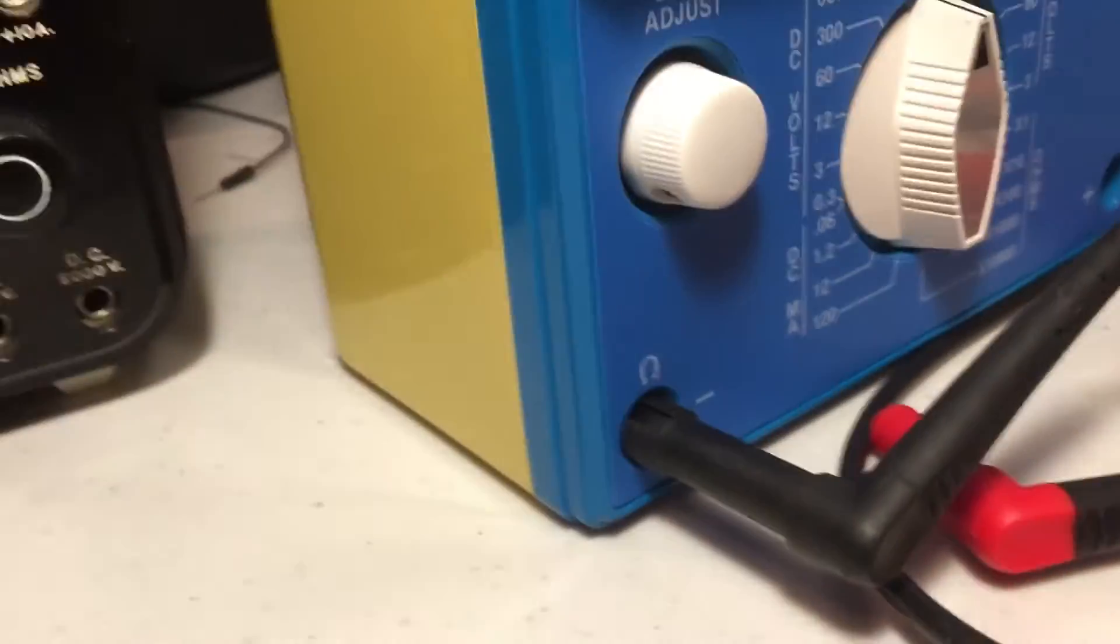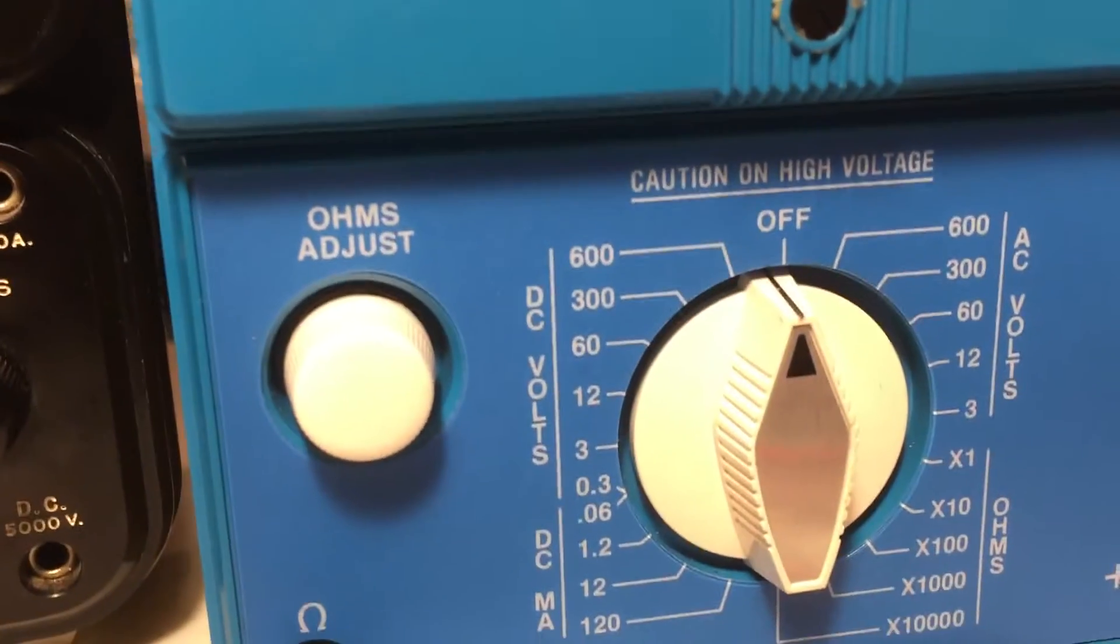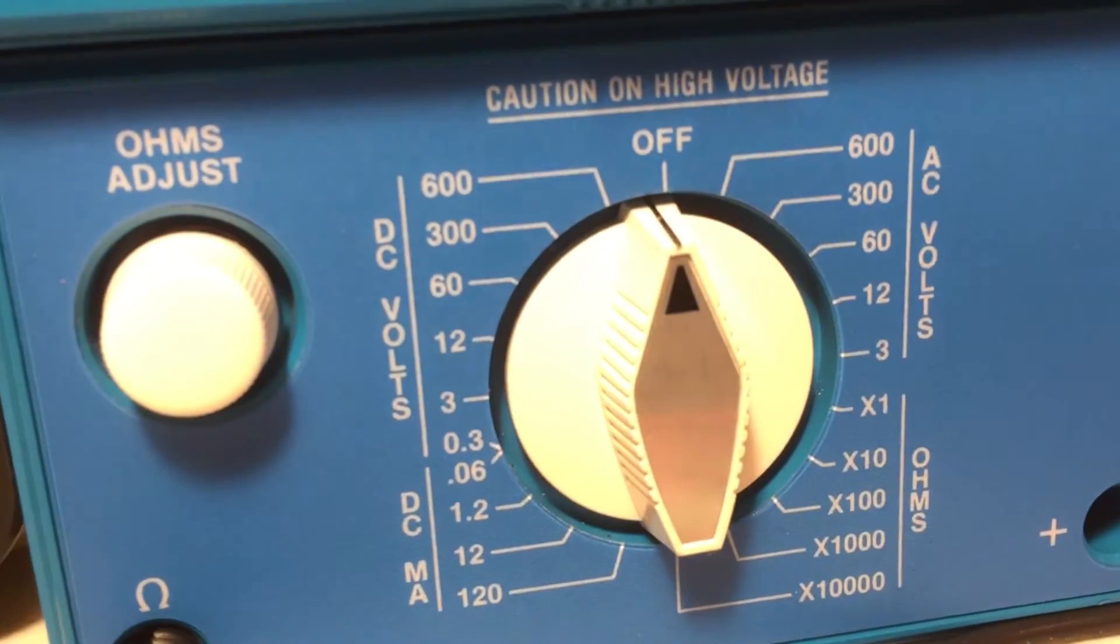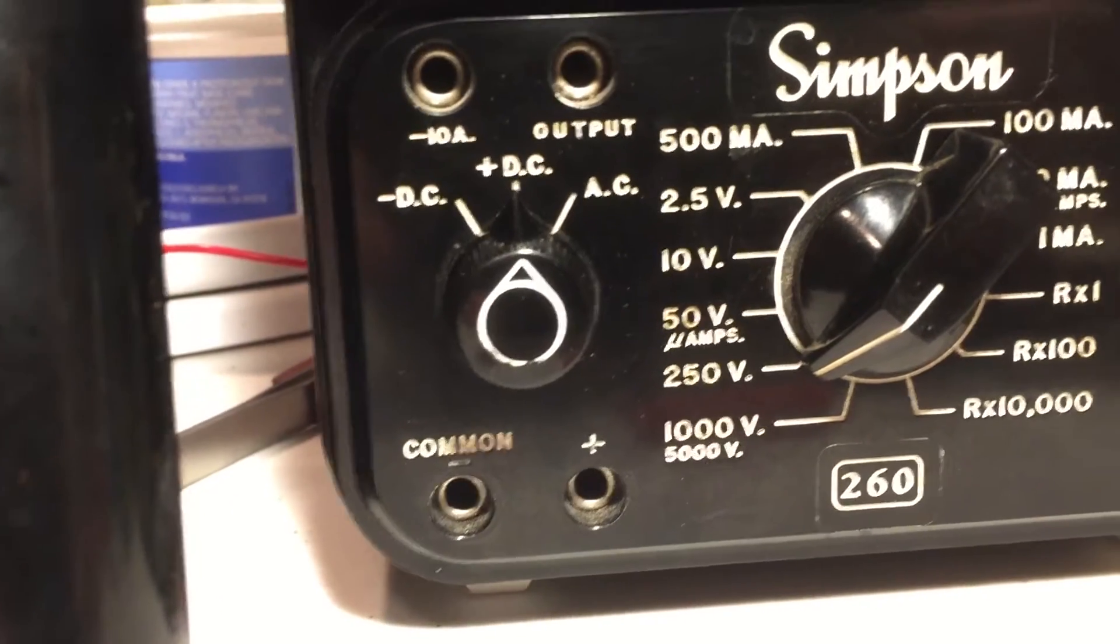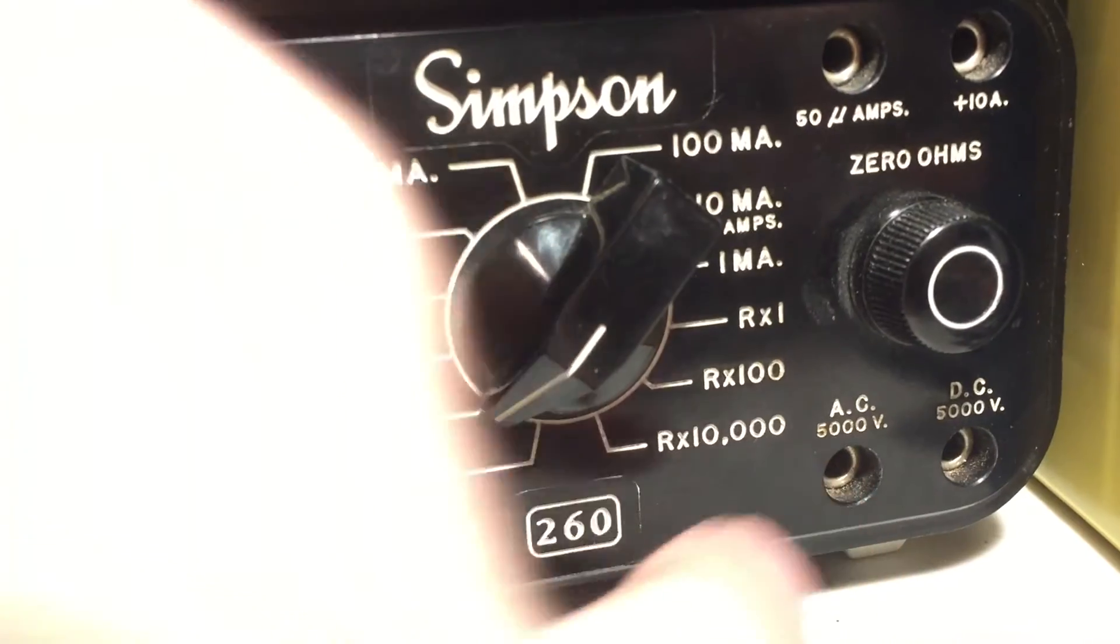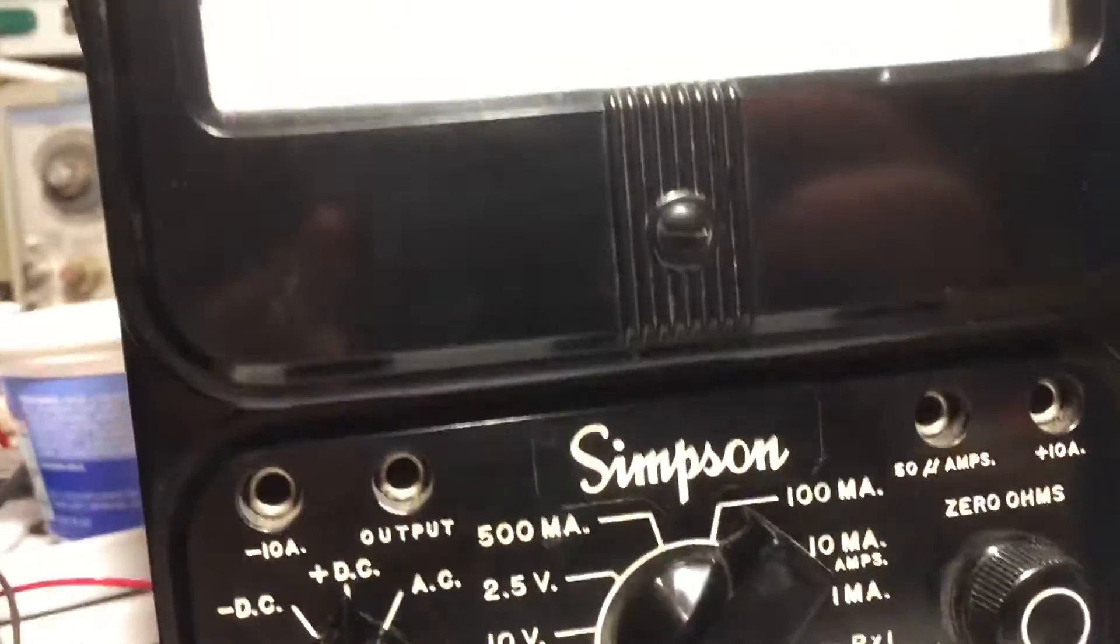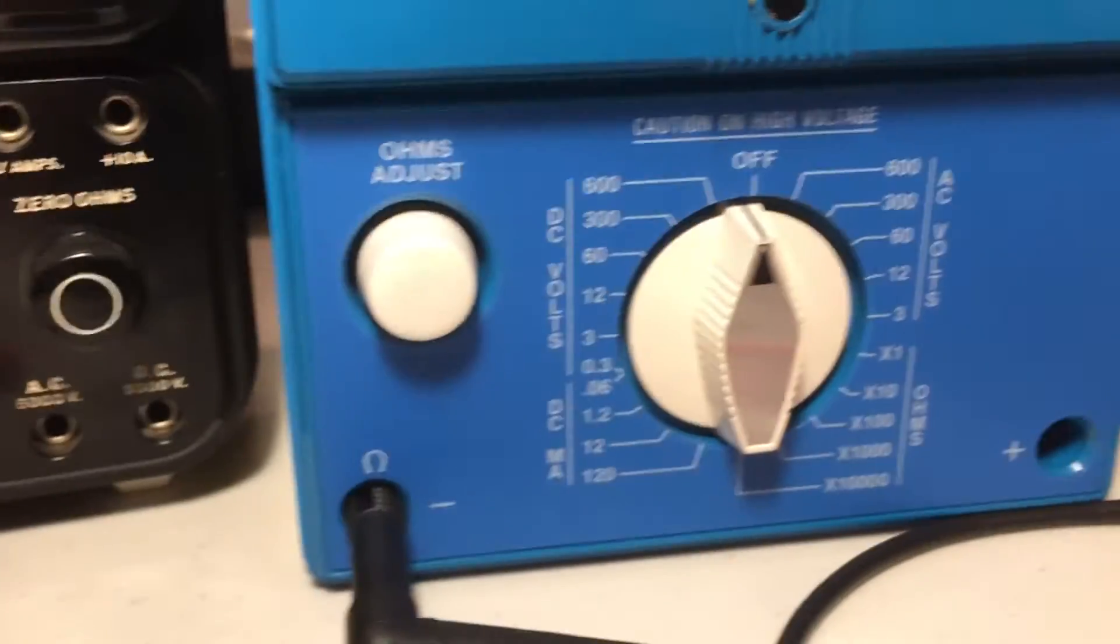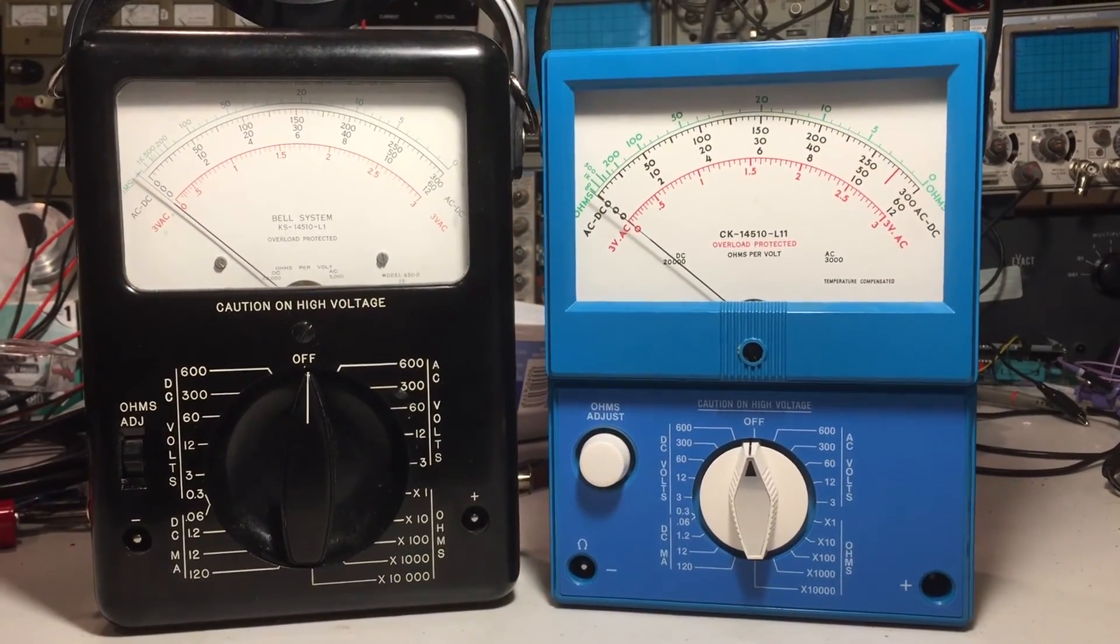Okay so other things to note differences between it and the regular 260 at least the series three here is this only goes up to 600 volts whereas the normal 360 goes to a thousand on this regular jacks or even its high voltage jack supposedly 5000. I've actually put 3500 volts through this guy and it didn't have any problems. Wouldn't really recommend that on a regular basis. All right so that's these two meters.